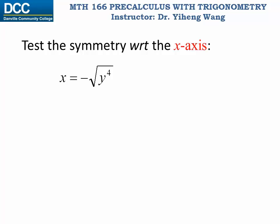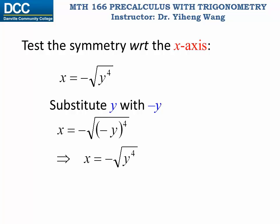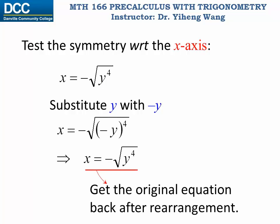We can use this property to test if the graph of an equation is symmetric with respect to the x-axis. Since positive or negative y values should correspond to the same x value, it shouldn't matter if we substitute y in the original equation with negative y. After rearrangement we should get the same equation back, and that indicates symmetry about the x-axis.